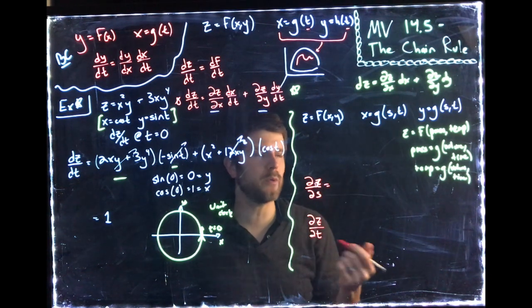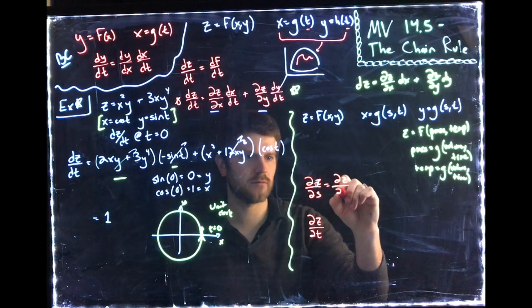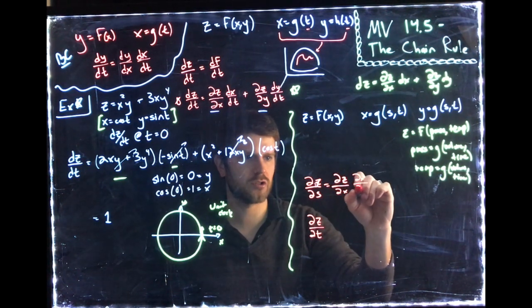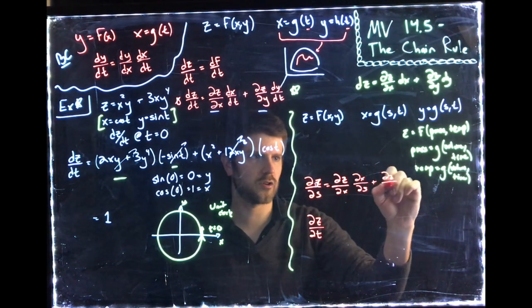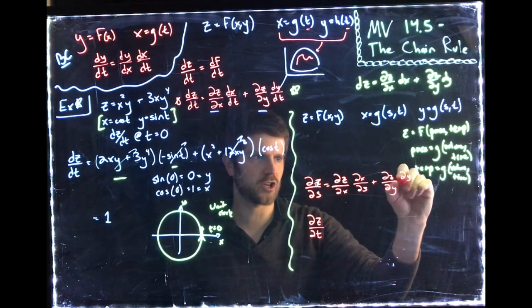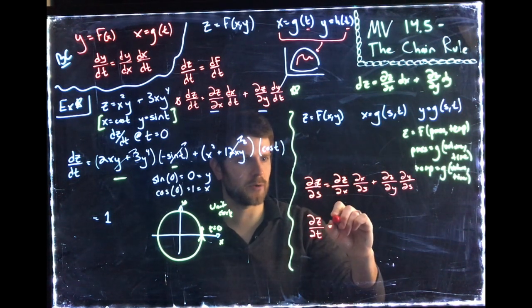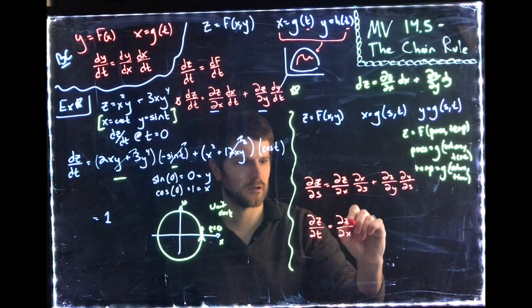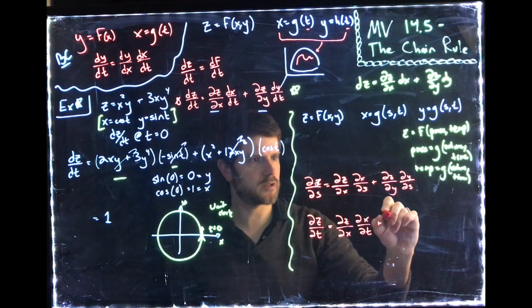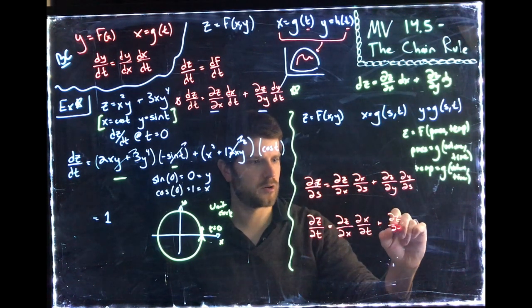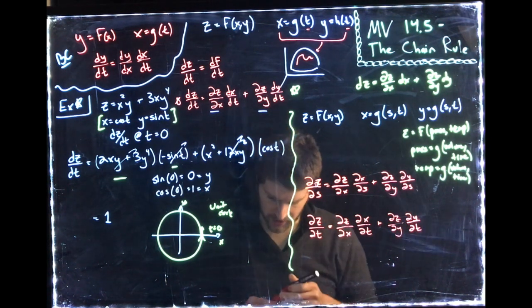But still, why would z change? Well, z could change because x changes. And x could change because s changes. And still, z could change because y changes. And y could change because s changes. And similarly, with partial z partial t, we get partial z partial x, partial x partial t plus partial z partial y, partial y partial t.